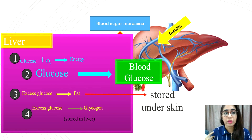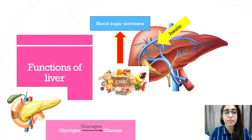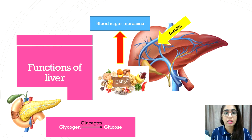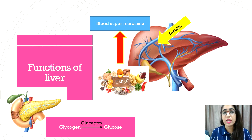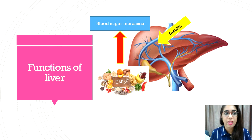If the level of blood glucose is too low, the pancreas will secrete glucagon to stimulate the conversion of stored glycogen in the liver or muscles into glucose for cellular respiration. If the storage of glycogen is depleted, then fats or protein will be turned into glucose for cellular respiration.